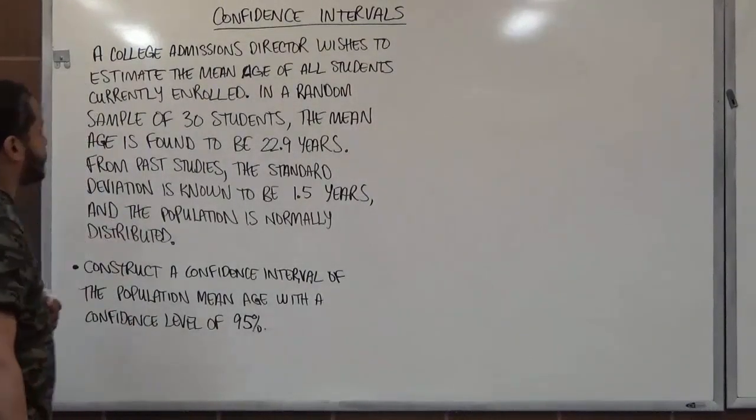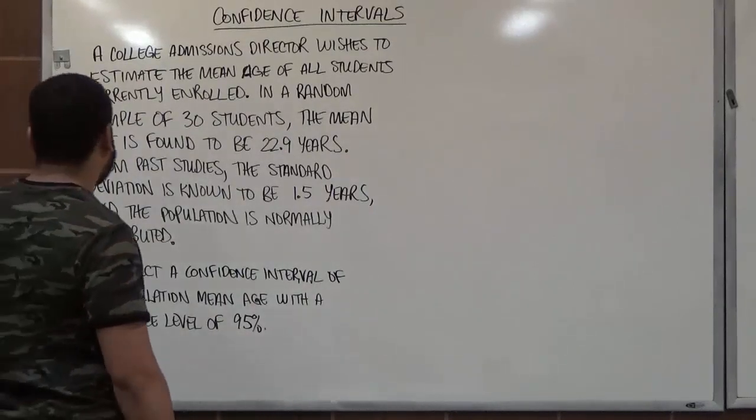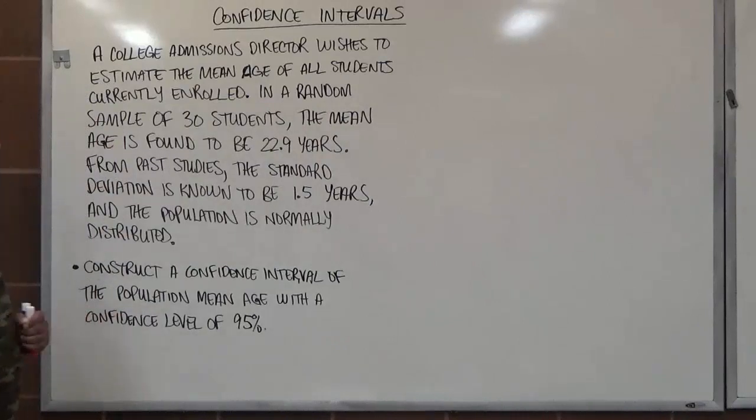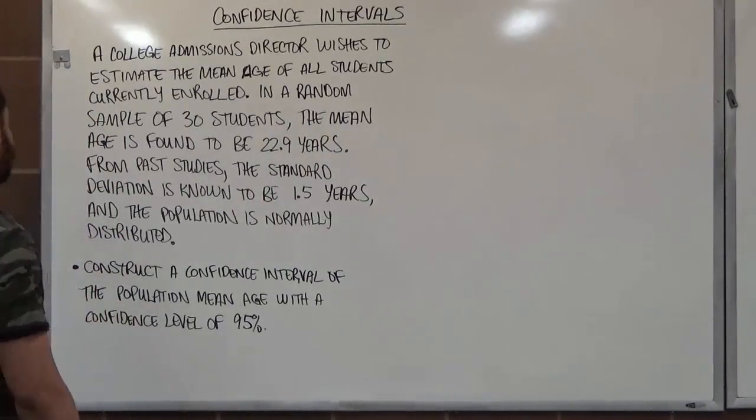In a random sample of 30 students, the mean age is found to be 22.9 years. From past studies, the standard deviation is known to be 1.5 years, and the population is normally distributed.